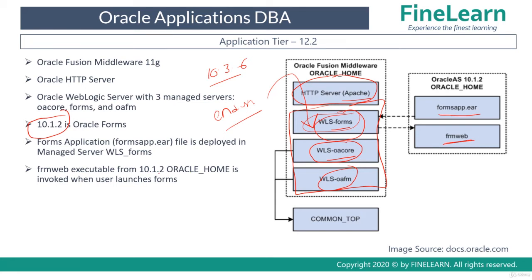The frmweb executable is located in the 1012 Oracle Home. Remember to separate requests into two parts: HTML-based applications, that is JSP pages and OAF pages, and second, forms. Initial requests are accepted by the HTTP server running on Apache, and then forwarded to the managed servers of WebLogic.